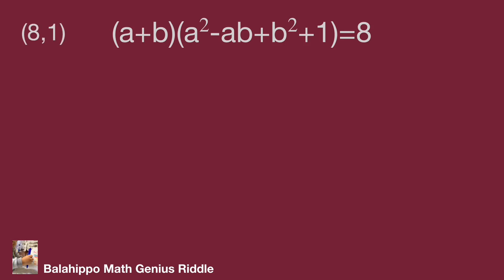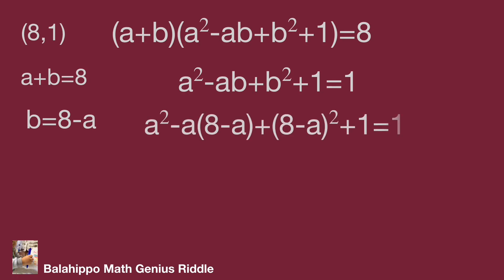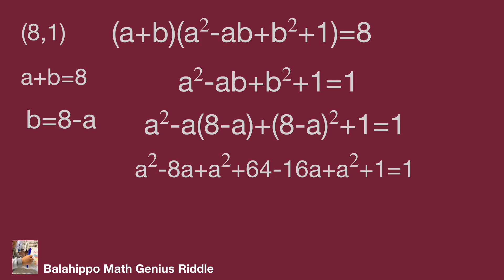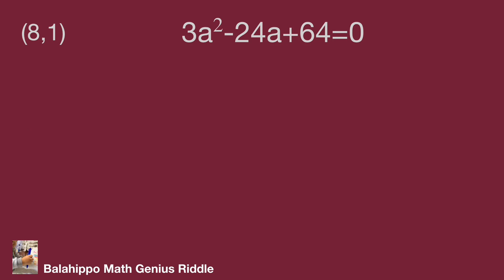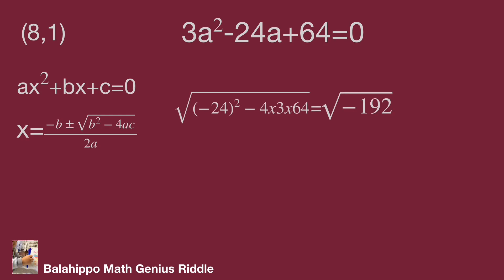In the (8, 1) number group: a plus b equal to eight, a squared minus ab plus b squared plus one equal to one, and b equal to eight minus a. Substituting gives three a squared minus 24a plus 64 equal to zero. Checking the discriminant: minus 24 squared minus four times three times 64 gives a negative value — no real root. This is also not the right group.